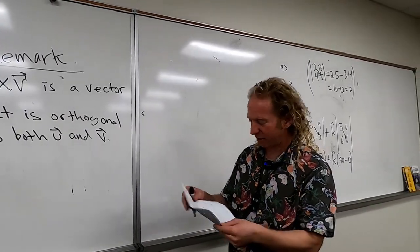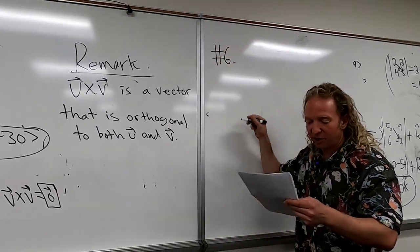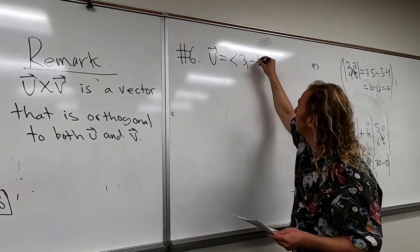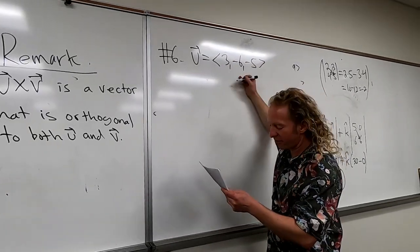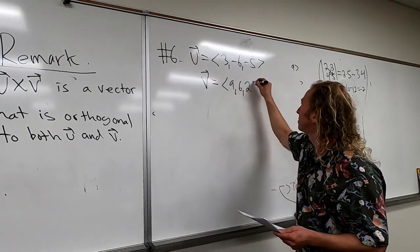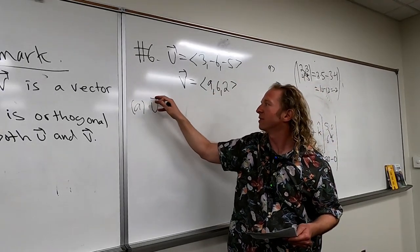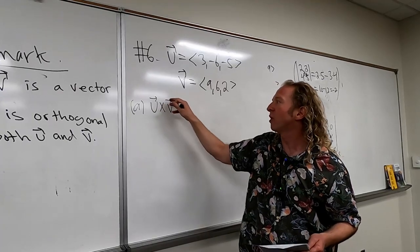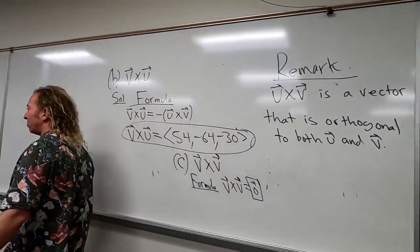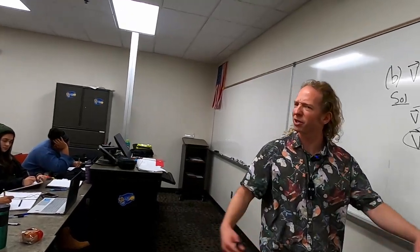Let's try number 6. We have u = ⟨3, −6, −5⟩ and v = ⟨9, 6, 2⟩. Find u cross v. Why don't you all try it — work together, take a few minutes, see if you can do it.